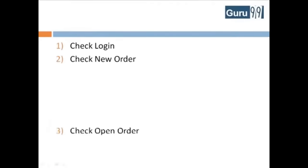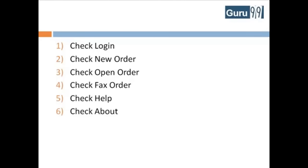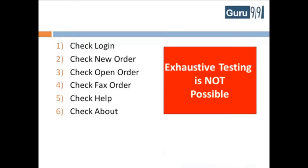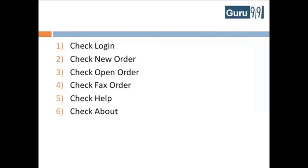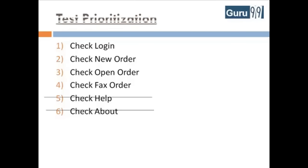Since exhaustive testing is not possible, suppose you have time to execute only 4 out of these 6 scenarios. Which 2 low-priority scenarios will you eliminate? Most would guess scenarios 5 and 6, since they are not the core functionality of the application. This is nothing but test prioritization.